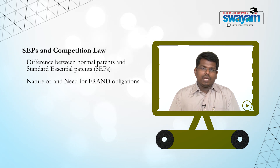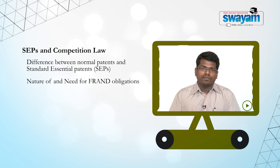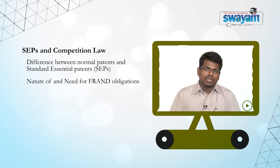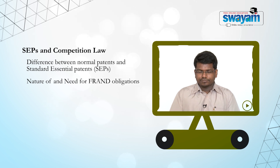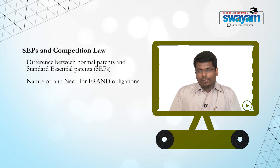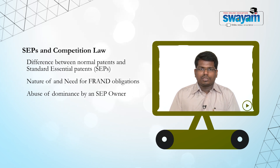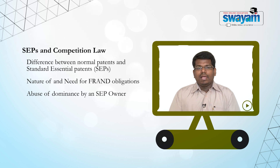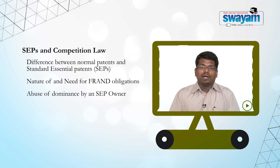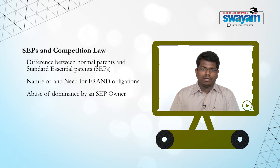How does this play out practically in terms of an interactive exercise of authority by the competition commission and the controller of patents? When the aspect of abuse of dominance by a standard essential patentee is brought to the attention of the competition commission, the commission has the power to look into those aspects of the patentee's conduct which amount to abuse within the meaning of section 4.